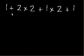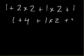We do multiplication first. So let's start with this multiplication right here. 2 times 2. Well that's 4, so we get 1 plus 4 plus 1 times 2 plus 1.